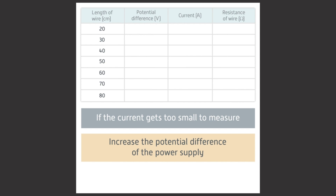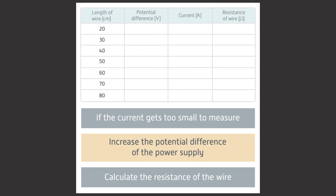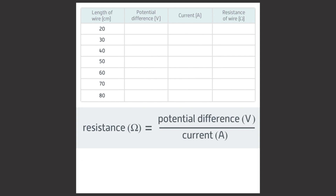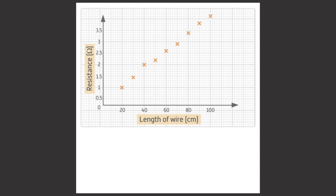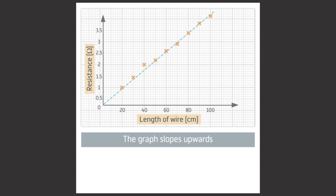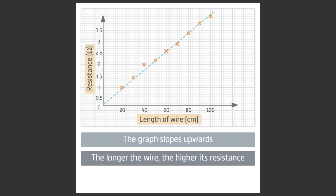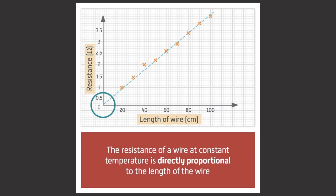If the current starts to get too small to measure, you can increase the potential difference of the power supply. For each set of results you can calculate the resistance of the wire using the formula: resistance equals potential difference divided by current. Put the resistance values into the last column of the table. Now use the results to plot a graph of resistance against the length of wire and draw a line of best fit. You'll find that the graph slopes upwards, which tells us that the longer the wire, the higher its resistance. You should find that the graph is a straight line that passes through the origin, which tells us that resistance of a wire at constant temperature is directly proportional to the length of wire.